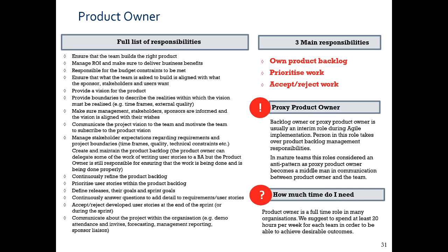The Product Owner must have the confidence to reject work when necessary. The Proxy Product Owner is a role where someone from the Scrum core team acts as a middle man between the Product Owner and the team — but this is not the Scrum Master. The Product Owner can also delegate writing user stories to business analysts. This is the end of the session.